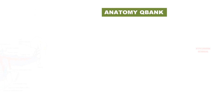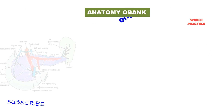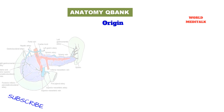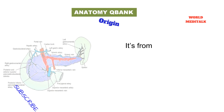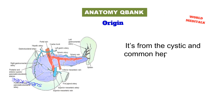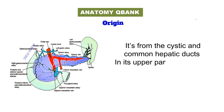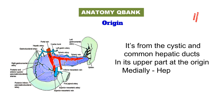Now let's talk a little bit about the anatomy of the common bile duct. Its origin is from the cystic and common hepatic duct. In its upper part, at the origin, medially there is the hepatic artery, and posteriorly there is the portal vein.